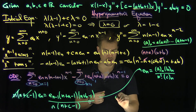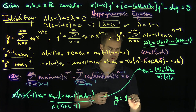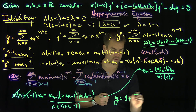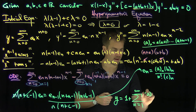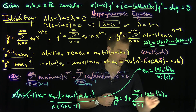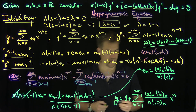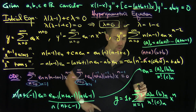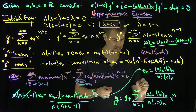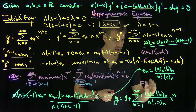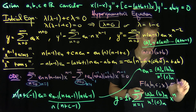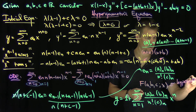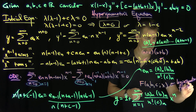So our solution is y equals the sum from n equals 0 to infinity of (a bracket n)(b bracket n) over n factorial (c bracket n) times x^n, setting e_0 equal to 1 to normalize. This is the hypergeometric function, written as F(a, b; c; x) — the hypergeometric function.